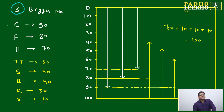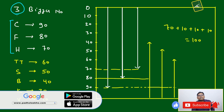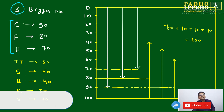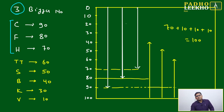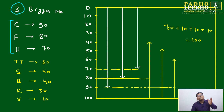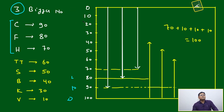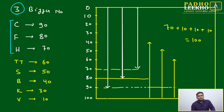To find the maximum number of students playing exactly three out of eight games using VLD, we first take the three largest numbers: Cricket (90), Football (80), and Hockey (70). We represent them as vertical lines on a scale from 0 to 100. We draw all three lines from the same side. The common overlap among all three will be the minimum value, which is 70 — this is the zone where all three are present.